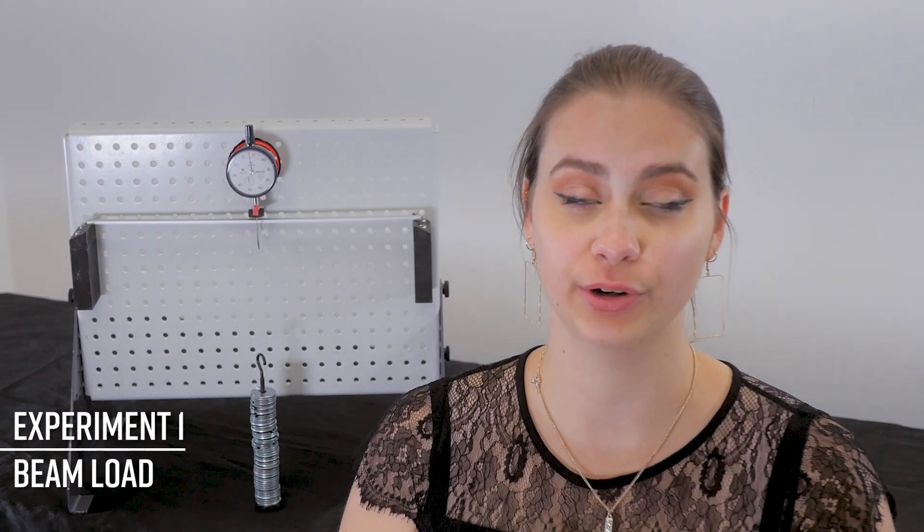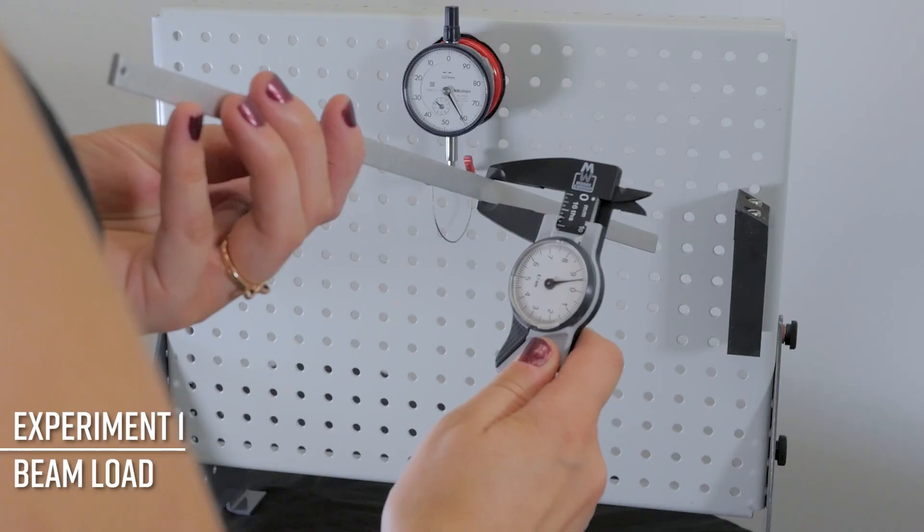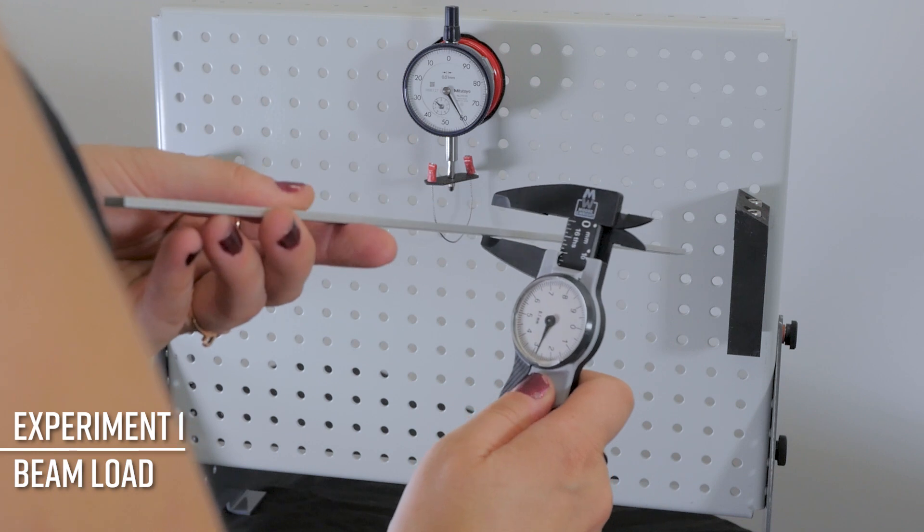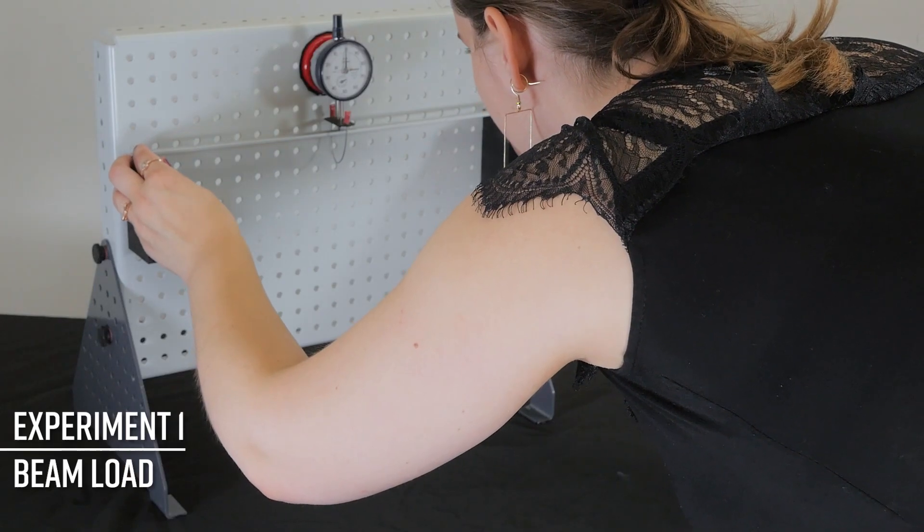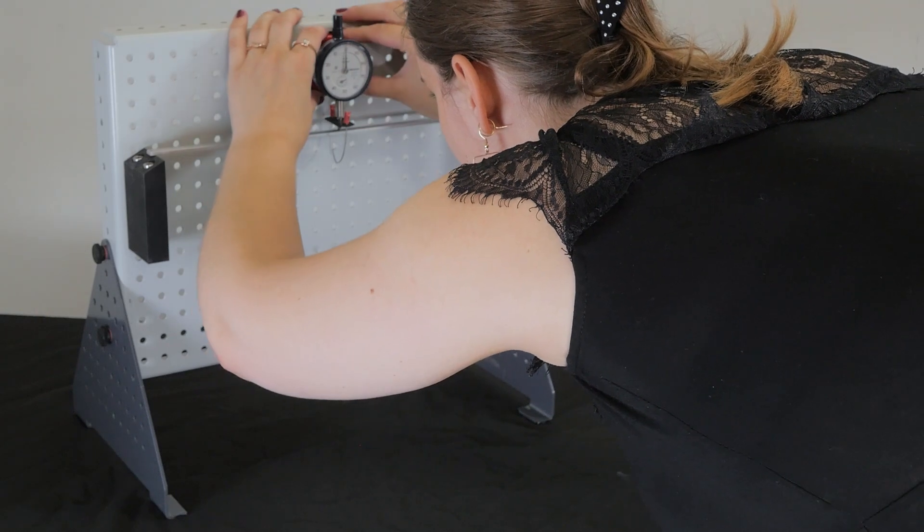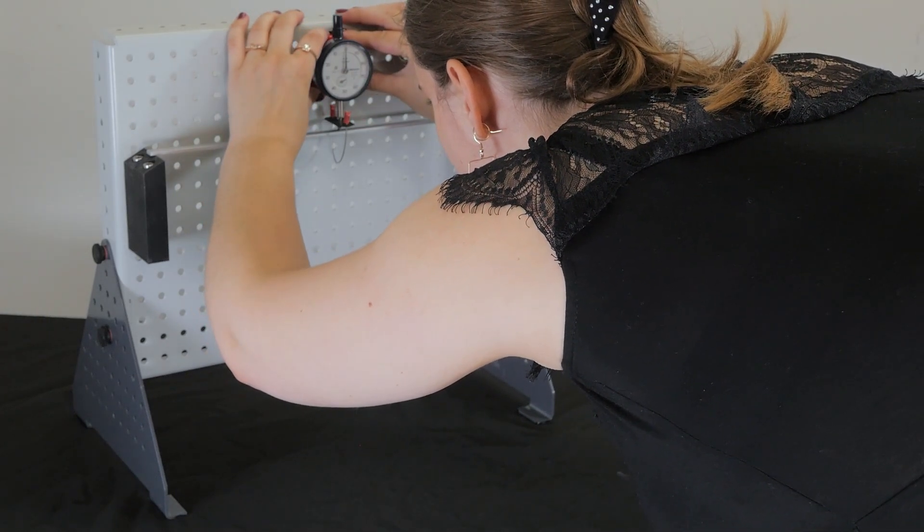Experiment one, beam load, shows the relationship between load and deflection for a beam. After measuring the beam size with the dial caliper gauge, adjust the dial indicator and wire stirrup to the middle of the beam at 180 millimetres.